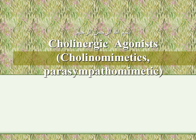Cholinergic agonists can also be termed parasympathomimetics, because acetylcholine is the main neurotransmitter for the parasympathetic nervous system at the postganglionic neurons innervating the effector organs — either smooth muscle, glands, or cardiac muscles. In this lecture, we will discuss their pharmacological actions, pharmacodynamic effects, clinical uses, adverse effects, and contraindications.